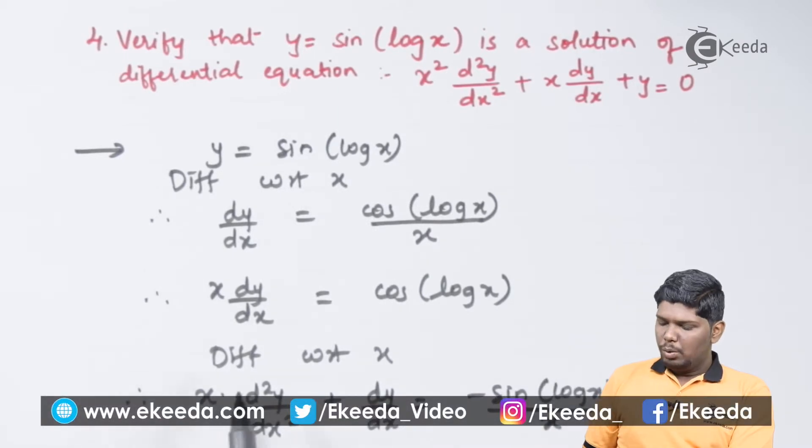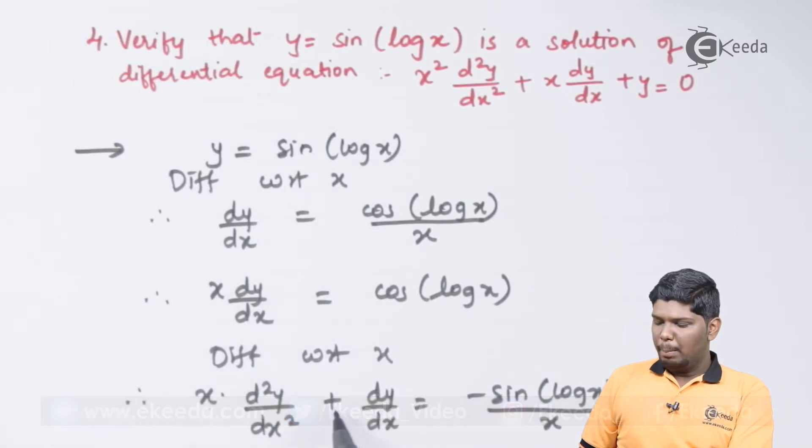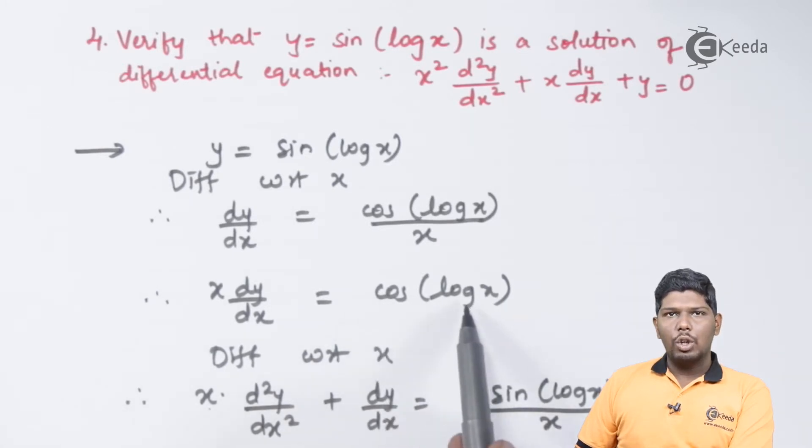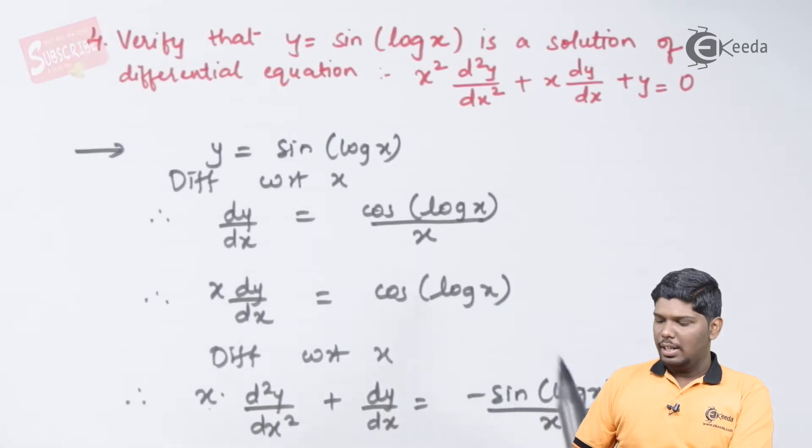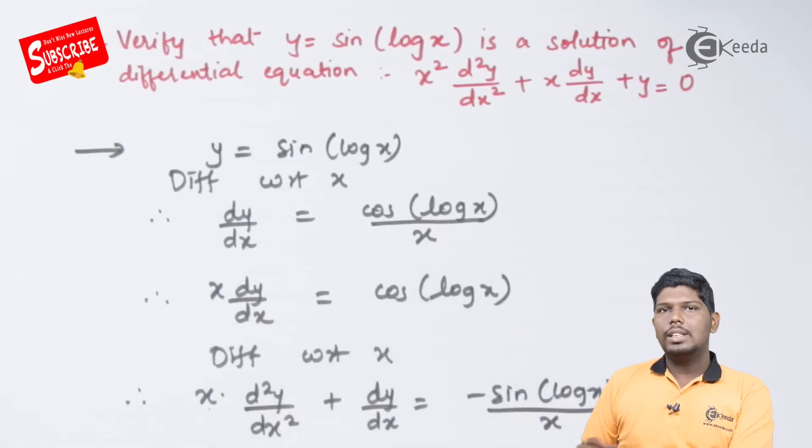This will give you x into derivative of dy by dx is d2y by dx square plus dy by dx into derivative of x is 1. On the right hand side, derivative of cos log x will give you minus sin log x into derivative of log x is 1 by x.